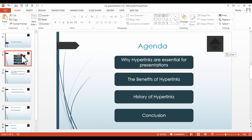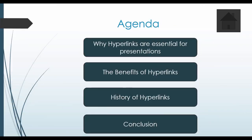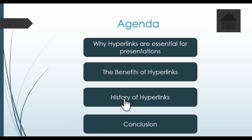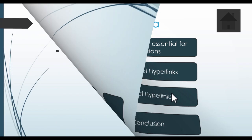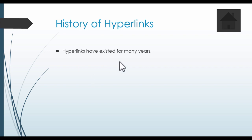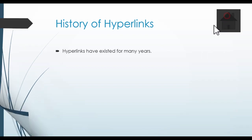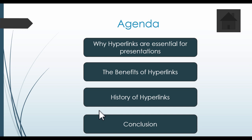Now if we select slide 2 and if we do a SHIFT-F5, as you can see, again we've got our home button, and from here we've also got hyperlinks for each of the sections of our slides. So for example, if I was to select 'History of Hyperlinks', as you can see, that takes me to that slide. But if I was very far in a presentation and I wanted to go back to that agenda slide, now I could just click on this home icon, like so, and it takes me right back there.